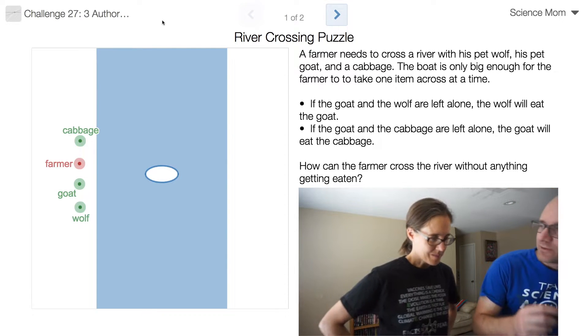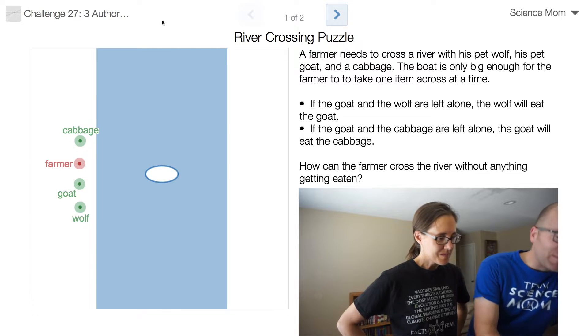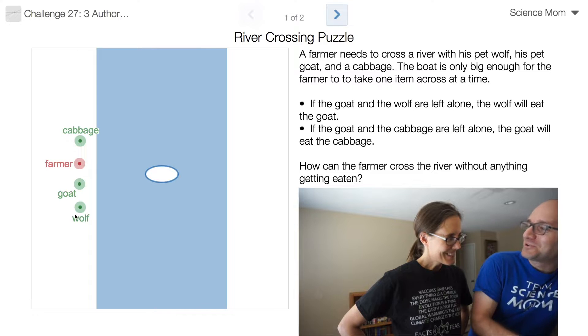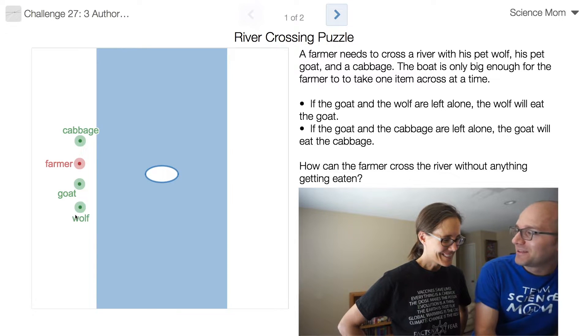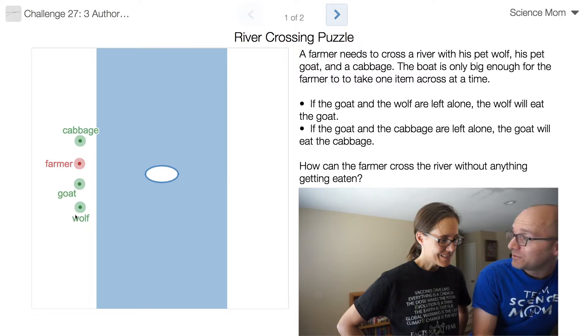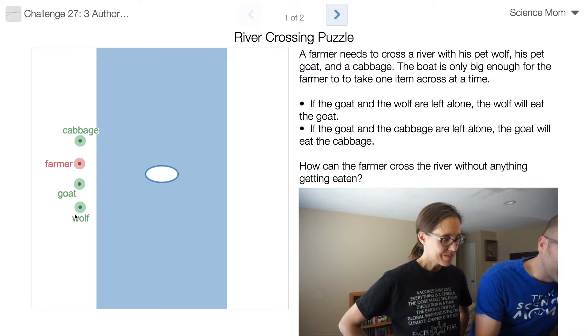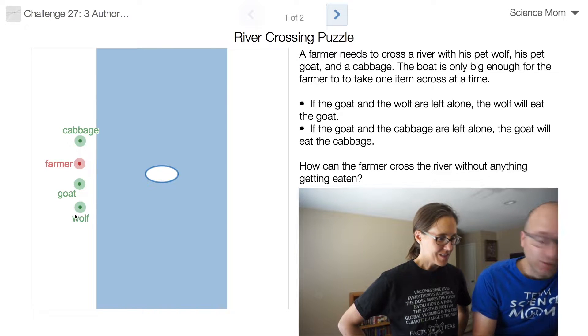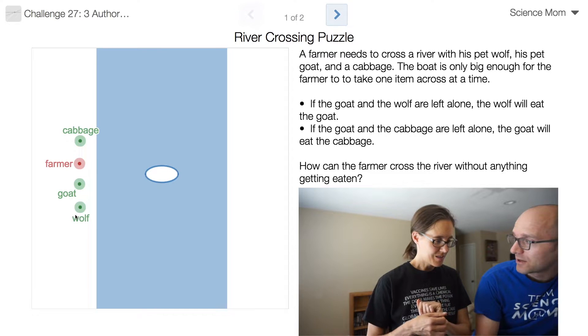I think we've all encountered this one before. You've got a farmer who has a cabbage, a goat, and a wolf, and they need to cross this river, but there are some incompatibilities. If the goat is left alone with the cabbage, he'll eat it. Or if the wolf is left alone with the goat, the wolf will eat the goat. So how can you get them all across?